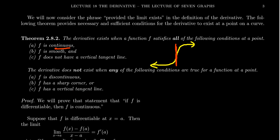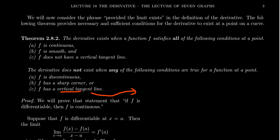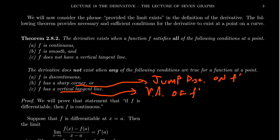So if a function is continuous, smooth, and has no vertical tangent lines, then it's differentiable. A function is differentiable if and only if it's continuous, smooth, and has no vertical tangent lines. If we're looking for places where the function is not differentiable, we look for these three things: a discontinuity, a sharp corner or cusp (no well-defined tangent line), or a vertical tangent line. If your graph has a vertical tangent line, this corresponds to a vertical asymptote of the derivative. If you have a sharp corner, this corresponds to a jump discontinuity on f prime. When f has a discontinuity, it's a bit harder to predict.